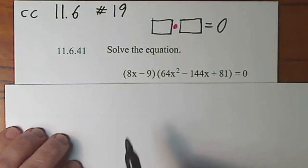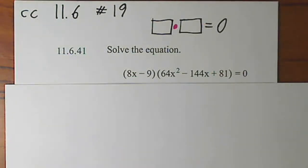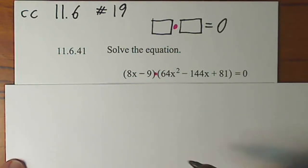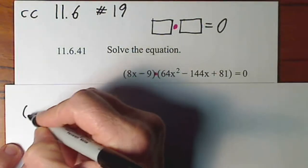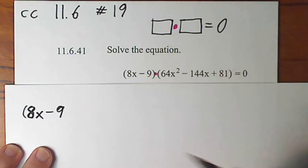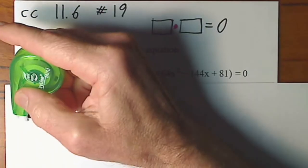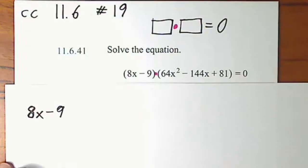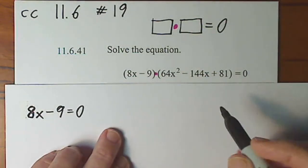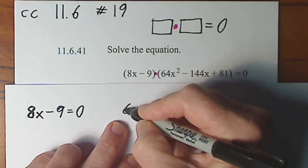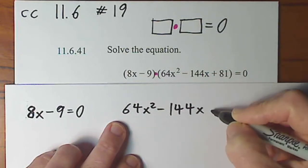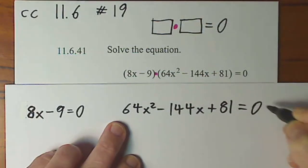We use that property to solve this equation. So since I have something times something equals zero, I can simply take the first set of parentheses and set it equal to zero. That's a strange way of writing 8x, but I did it. Minus nine. I really don't even want parentheses here. All right, so it's just 8x minus 9 equals zero, and then I can take this second set of parentheses. I'm going to drop the parentheses though and just say 64x squared minus 144x plus 81 equals zero.